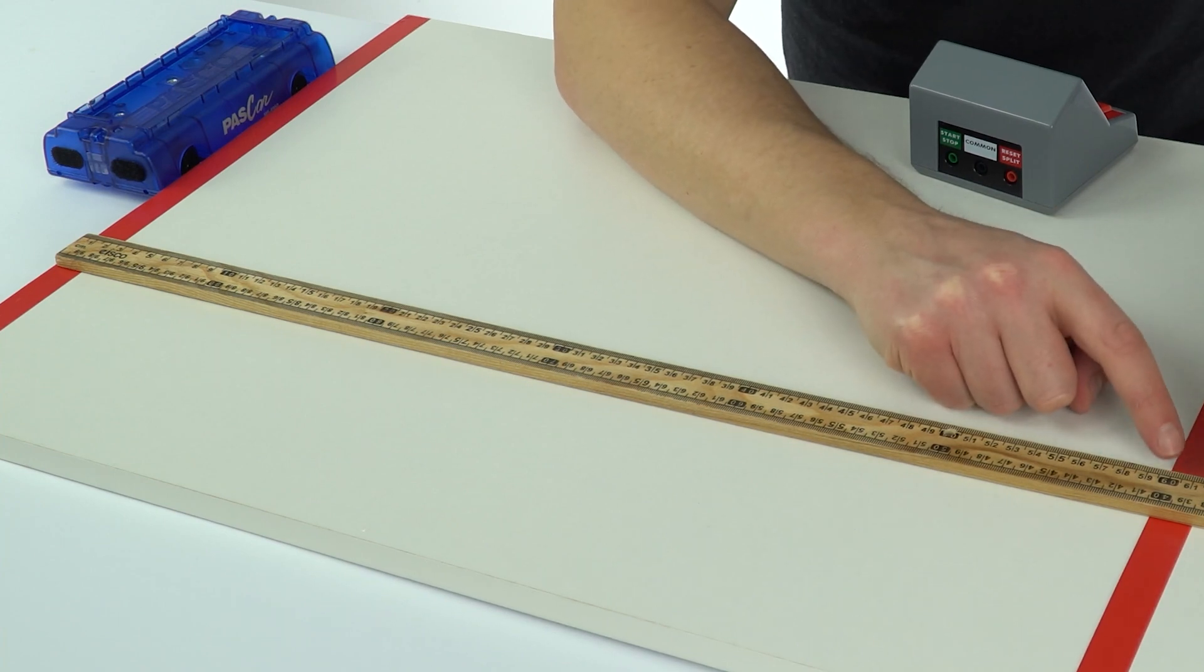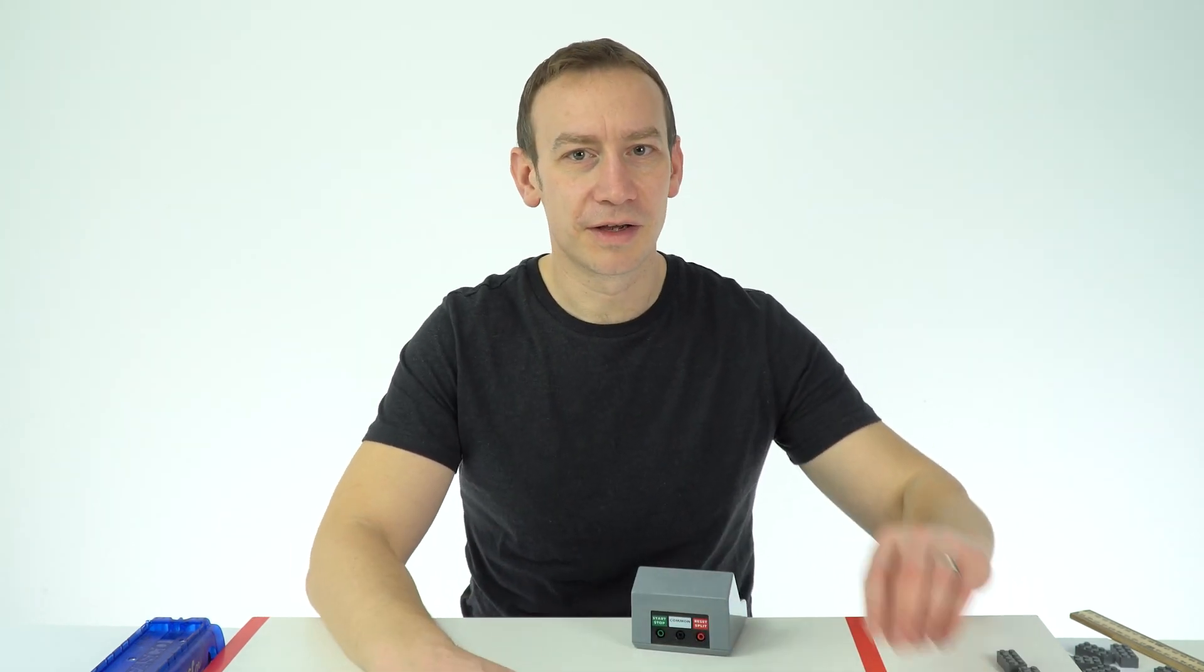We can measure to the nearest millimetre but I'm giving all of my units in standard SI units. So length in metres, time in seconds. We know the distance is 0.600 of a metre.